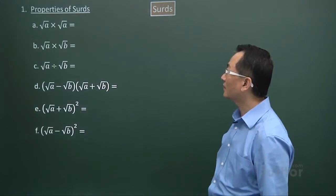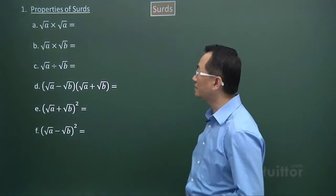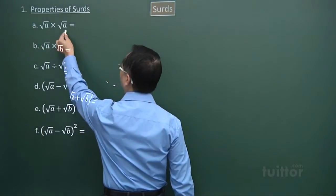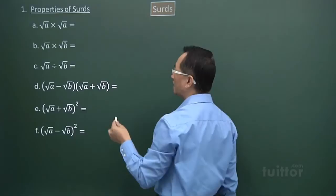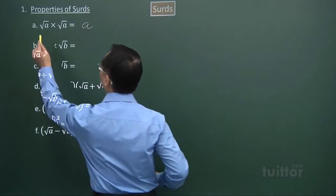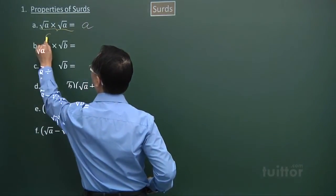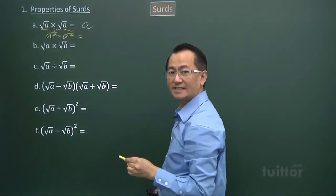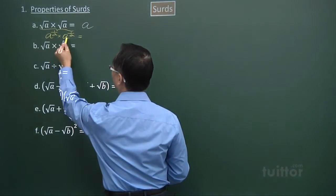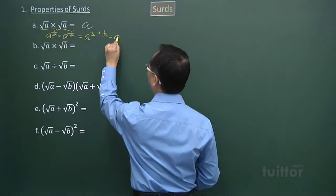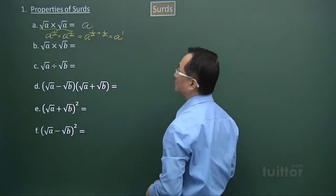We are now looking at a teaching video on surds. We look at point 1, the properties of surds. In part a, we have square root a multiplied by square root a. Thinking in terms of indices, that is a to the power of half times a to the power of half — same base, product of two terms, so we add the indices: half plus half equals 1, giving a to the power of 1, which is a.